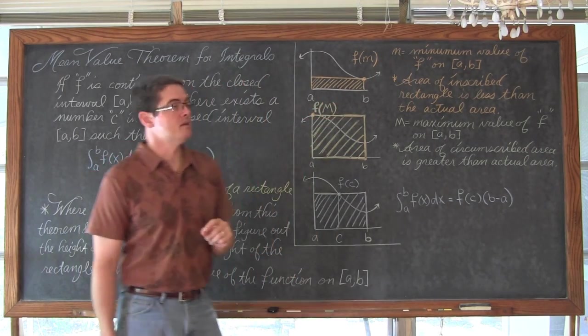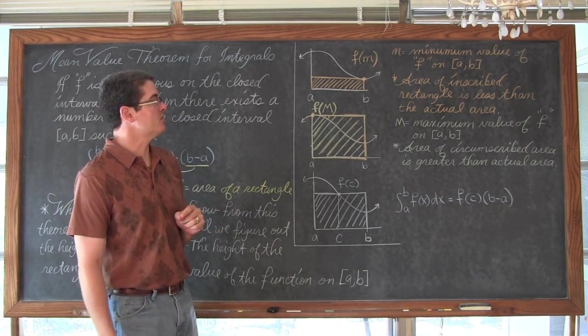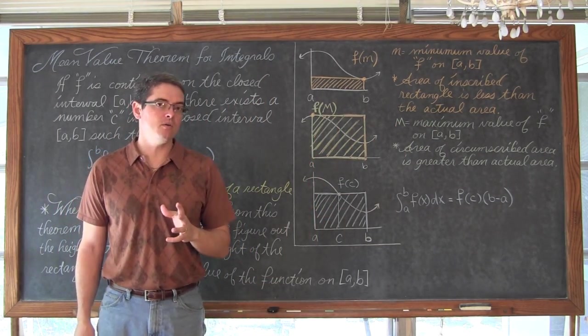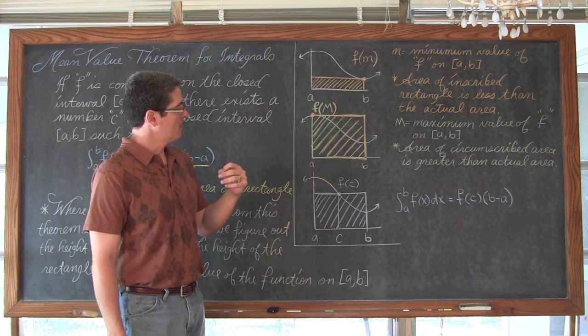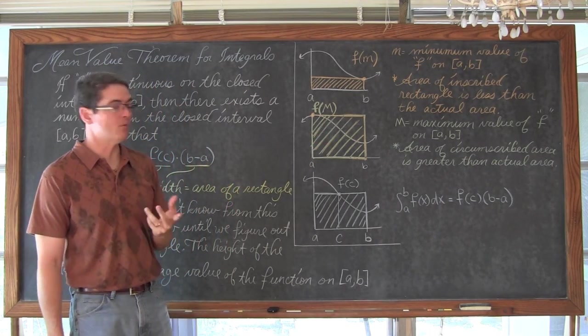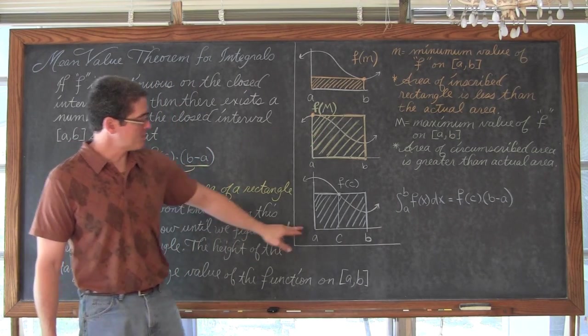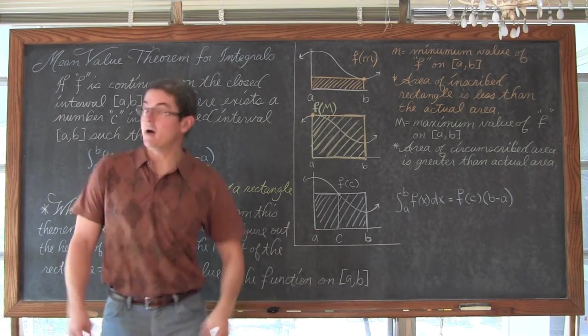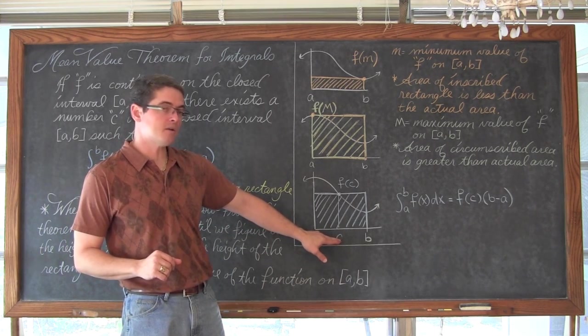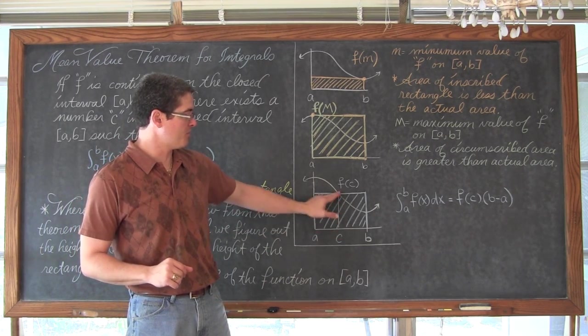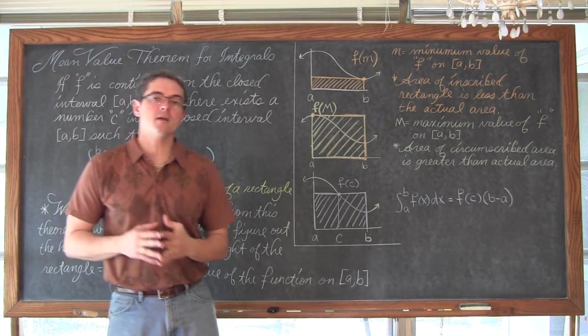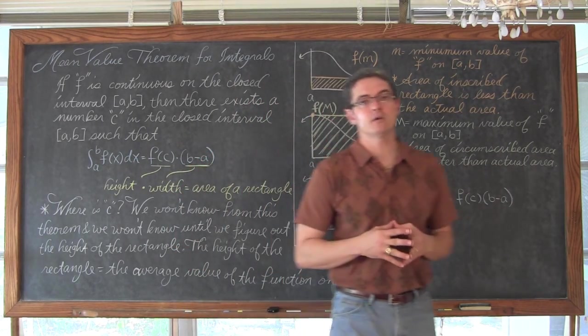Where our lower case m is the minimum value of our function on that closed interval, and capital M is going to be identifying the maximum value for what independent variable can you plug in and get that maximum value for the function. And that would be our circumscribed rectangle. Well somewhere in that closed interval there is guaranteed by the mean value theorem for integrals a value c on that closed interval such that when you take the value of c and you plug it into the function you get a height. And that height times width, the area of that rectangle is going to be equal to the bound area that we discussed.